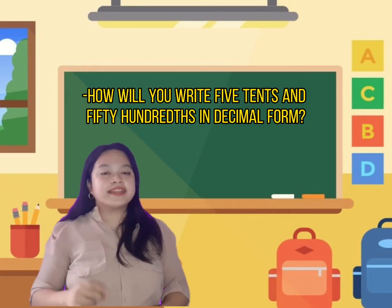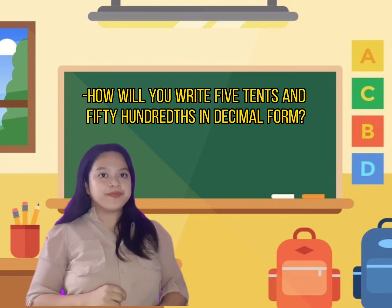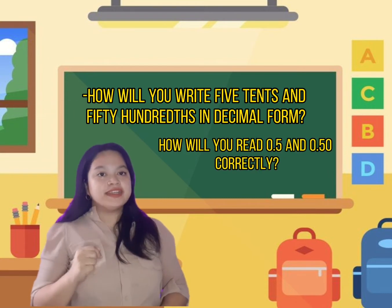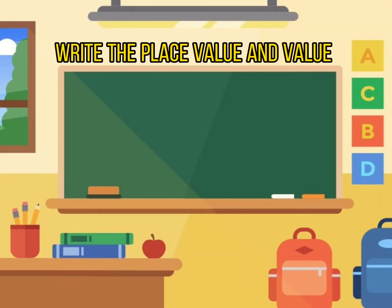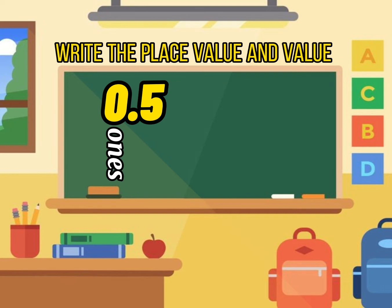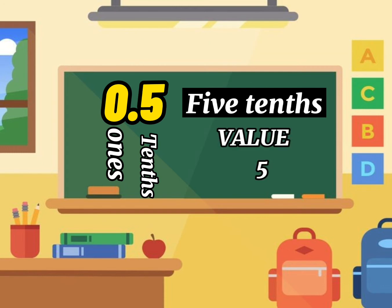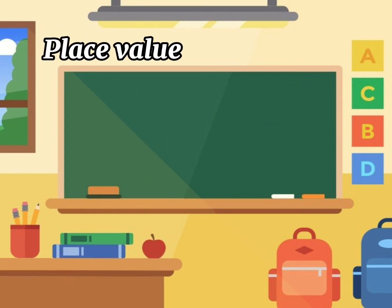Now, how will you write five tenths and fifty hundredths in decimal form, and how will you read 0.5 or 0.50? Let's write the place value and value of each digit for 0.5. Zero is in the ones place and 5 is in the tenths place. Why is the location of 5 in the tenths place?